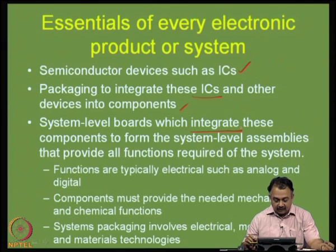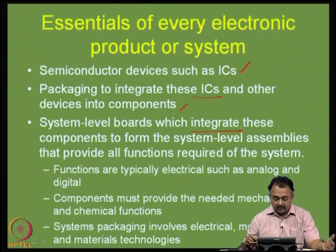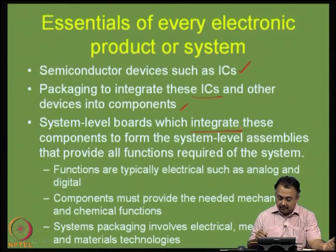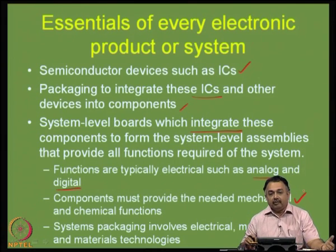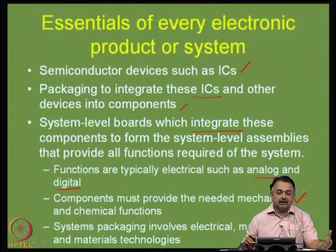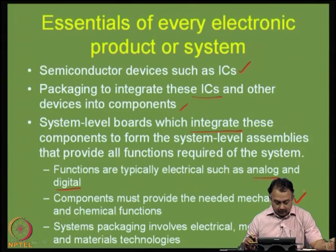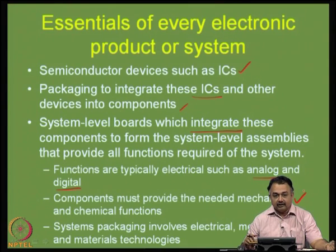In all of these, the functions required of a typical electronic system include electrical interconnections, and functions can be classified as analog or digital. Components must provide the needed mechanical and chemical functions because they require rigidity and sturdiness for a particular product. In some cases there are certain chemical functions expected from a product, especially in the case of bio applications.